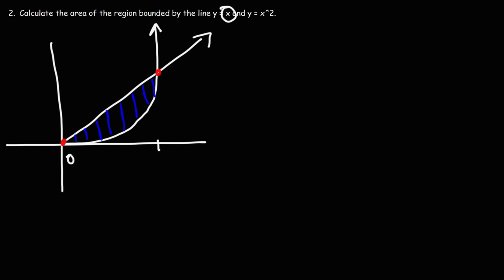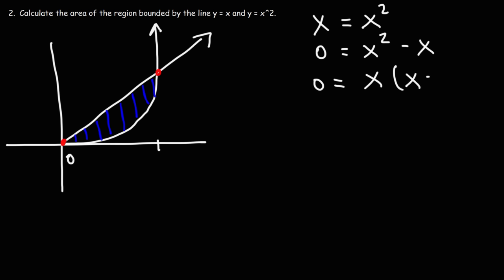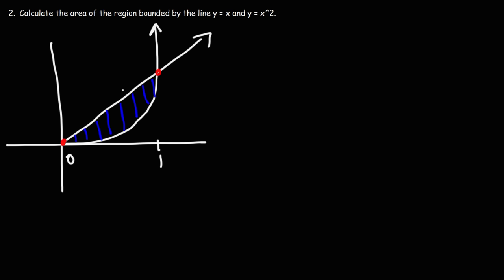To find the second point of intersection, set x equal to x squared. Subtracting x from both sides: 0 equals x squared minus x. Factoring out x: 0 equals x times (x minus 1). By the zero product property, x equals 0 and x equals 1. The top function f of x is y equals x, and the bottom function g of x is x squared.